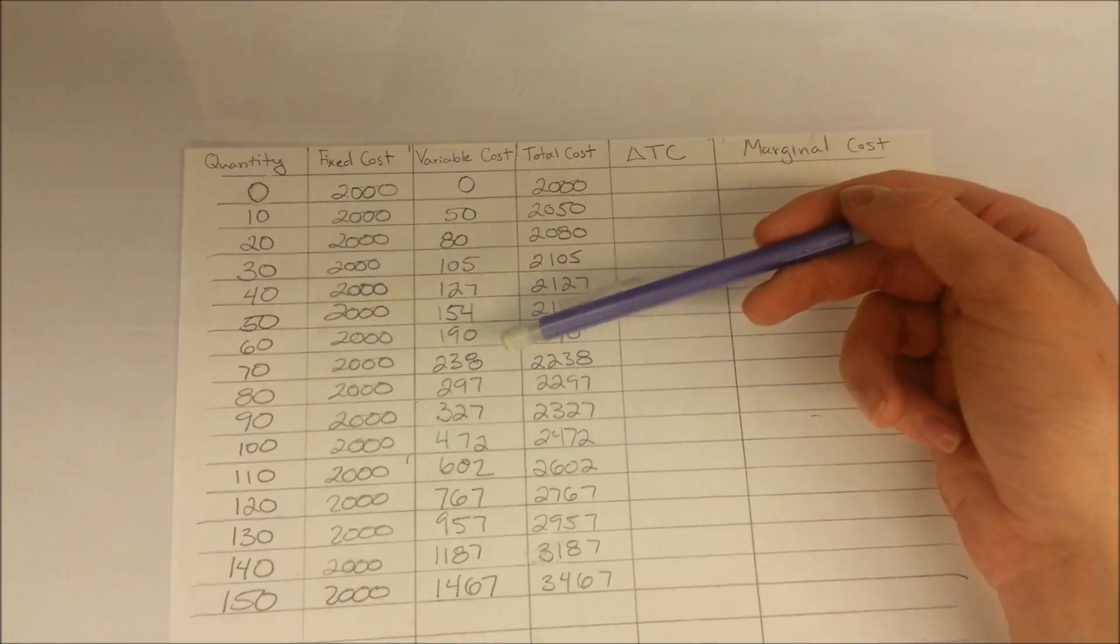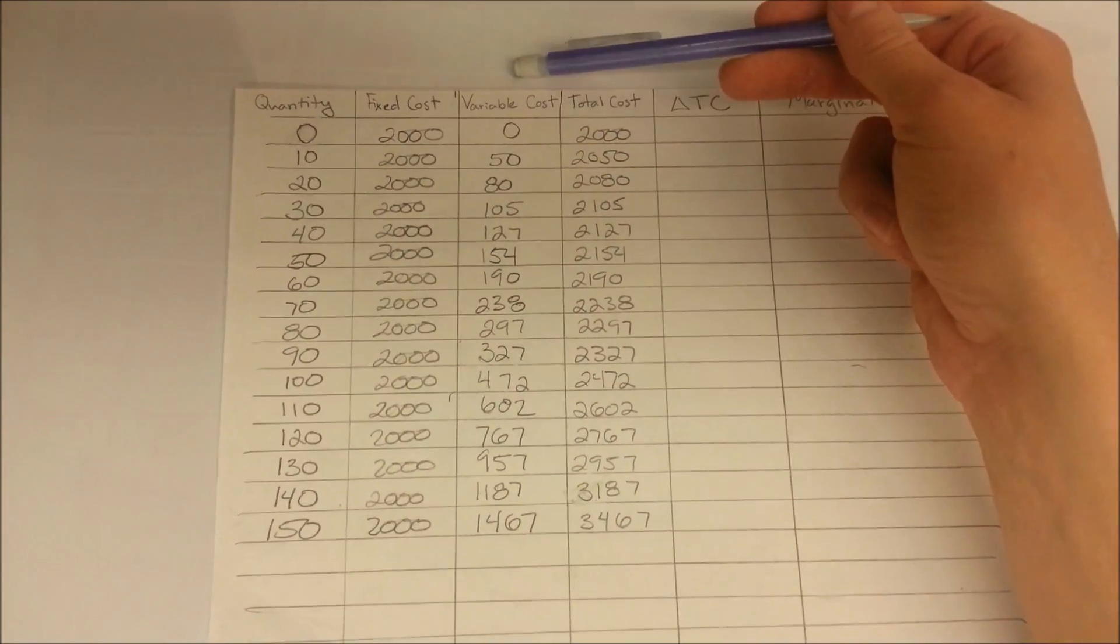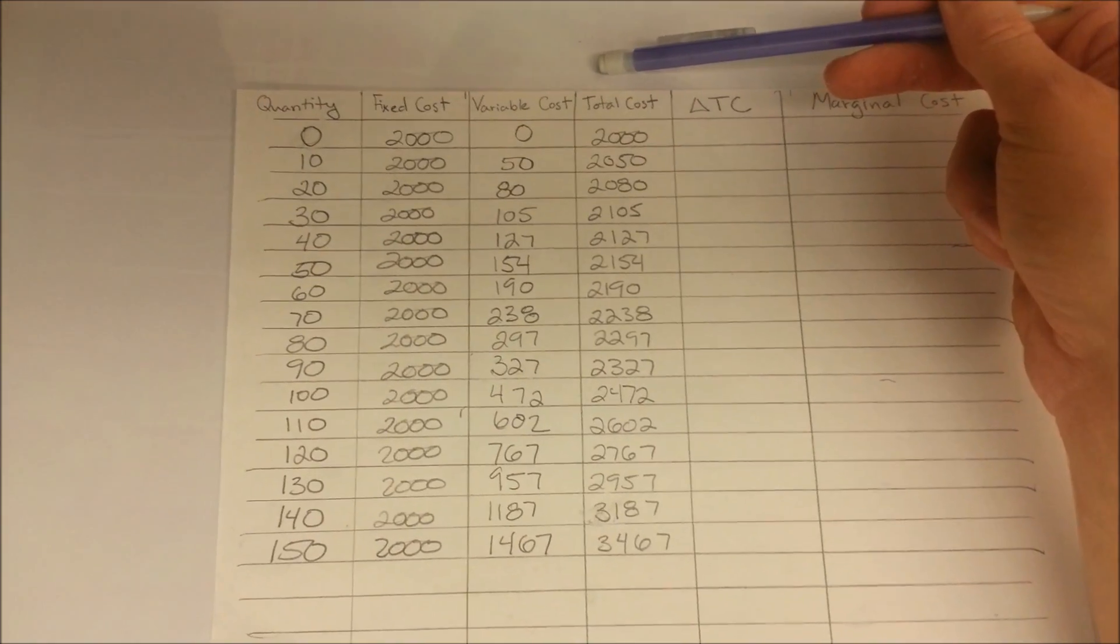Our variable cost will be changing throughout the problem and by adding our fixed cost and variable costs, we calculate our total cost.